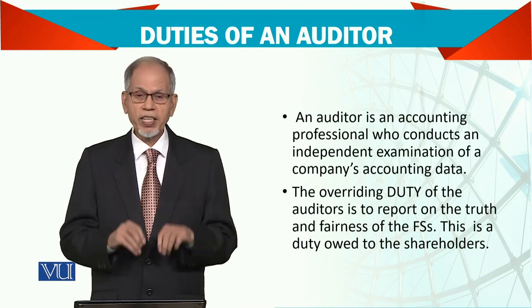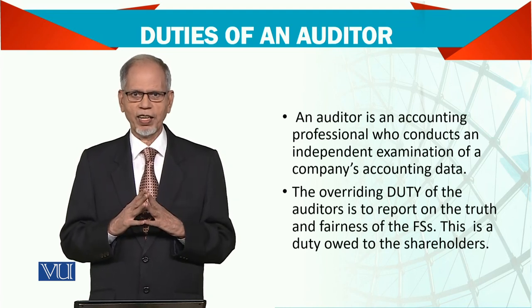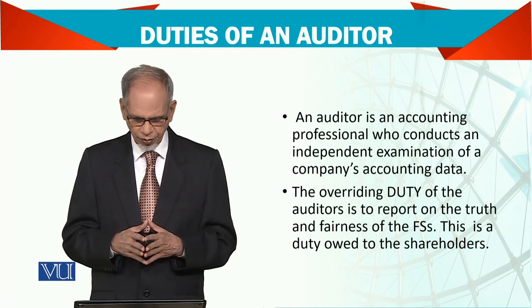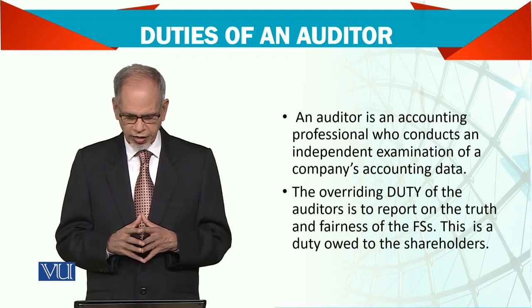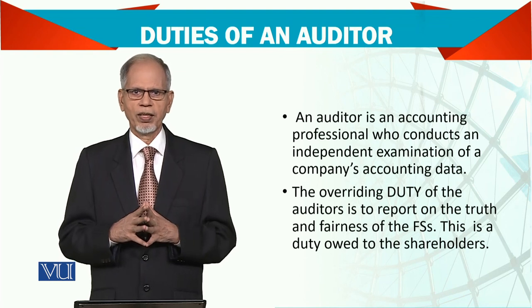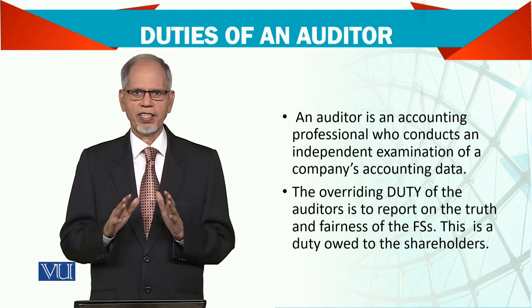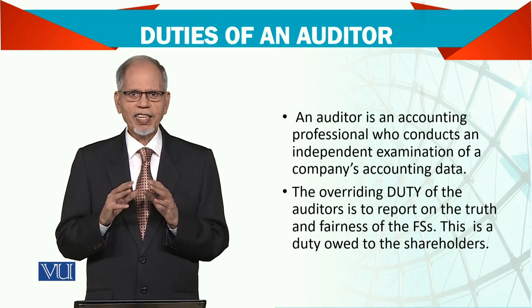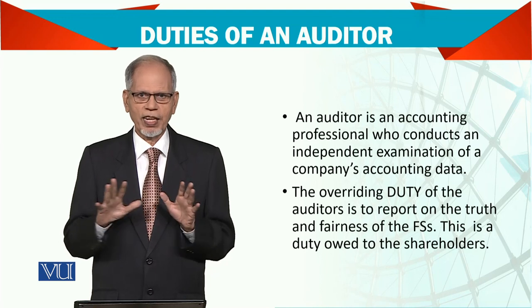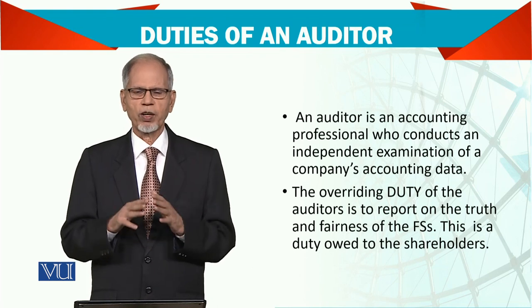The duty of the auditor includes checking that the closing balance from the previous year's audit has been correctly carried forward as the opening balance in the current year. The overriding duty of the auditor is to report on the truth and fairness of the financial statements. The auditor cannot claim 100% correctness — the responsibility is for truth and fairness, meaning the statements are correct according to the record and according to the standard.